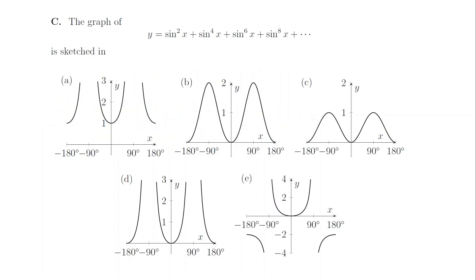1c. This sum is a geometric series, which we could evaluate, or we could just note that when x is 0, the sum is 0, and when x is 90 degrees, the sum diverges. So the graph is d.